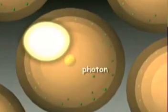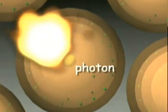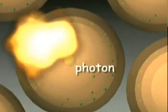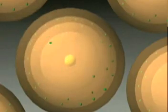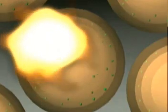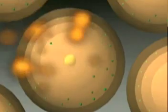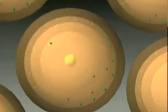This photon or particle of light is the energy released when the electron moves back to a lower energy level or orbit. So, it is the movement of electrons back and forth between energy levels that produces the photons of light.